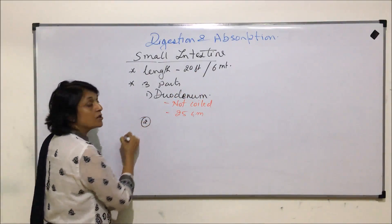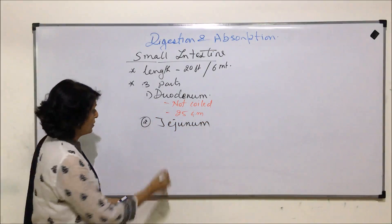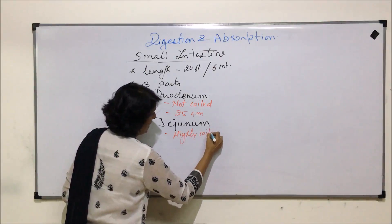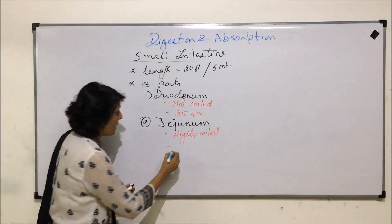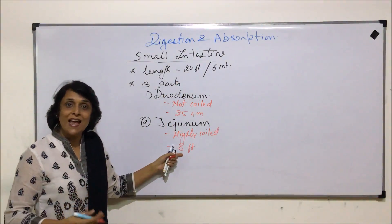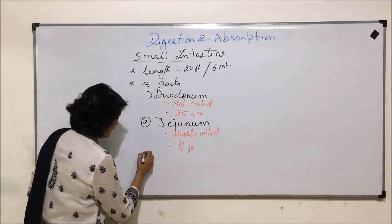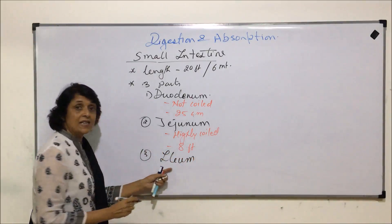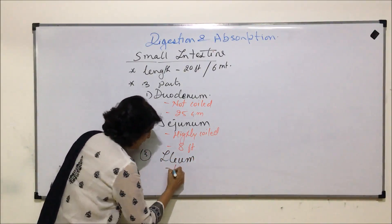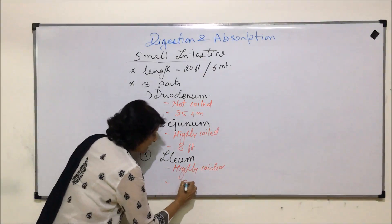The next part of small intestine is known as jejunum. Jejunum is a highly coiled structure, and length-wise it makes about 8 feet. Out of 20 feet, 8 feet is jejunum. The last part, the third part, is ileum, and this is the longest part. It is also highly coiled and approximately 12 feet in length.